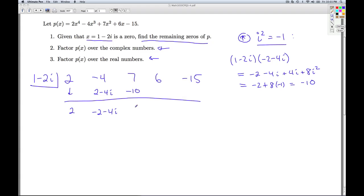And now I add and get -3. I multiply this by -3, I get -3 + 6i. I add these together, I get 3 + 6i.